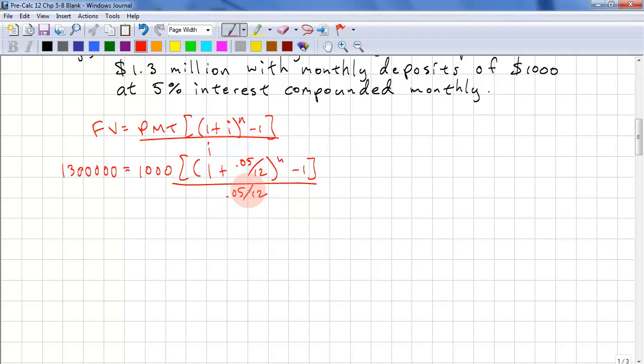We're going to take the reciprocal of this and multiply it by this. So we have 1.3 million equals this is 12,000 divided by 0.05, so that's 240,000. Now we can evaluate to the power of n minus 1.